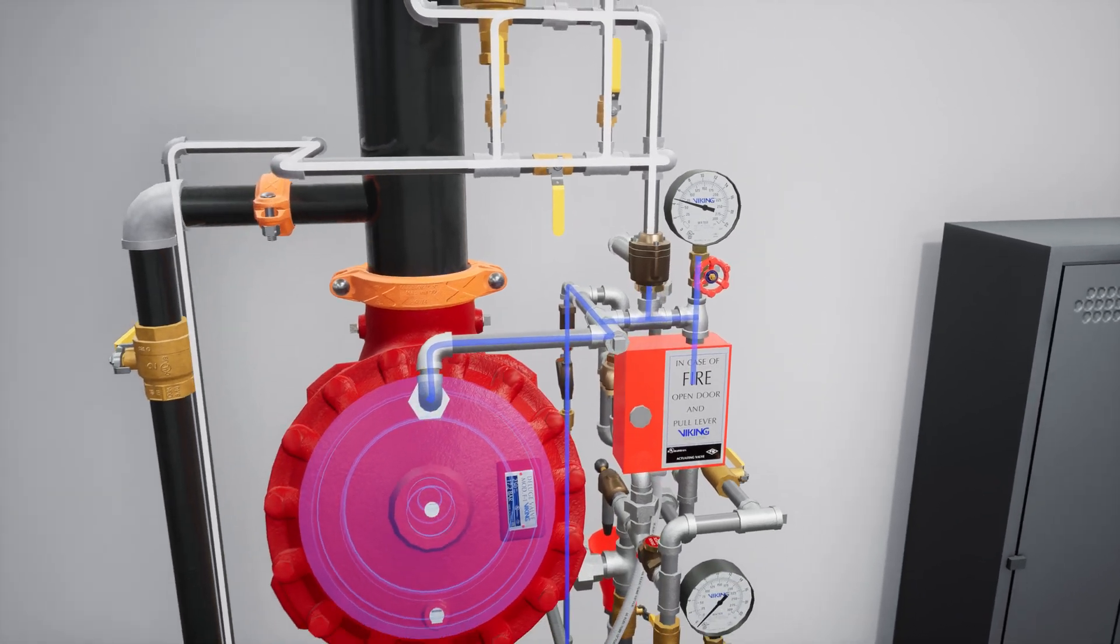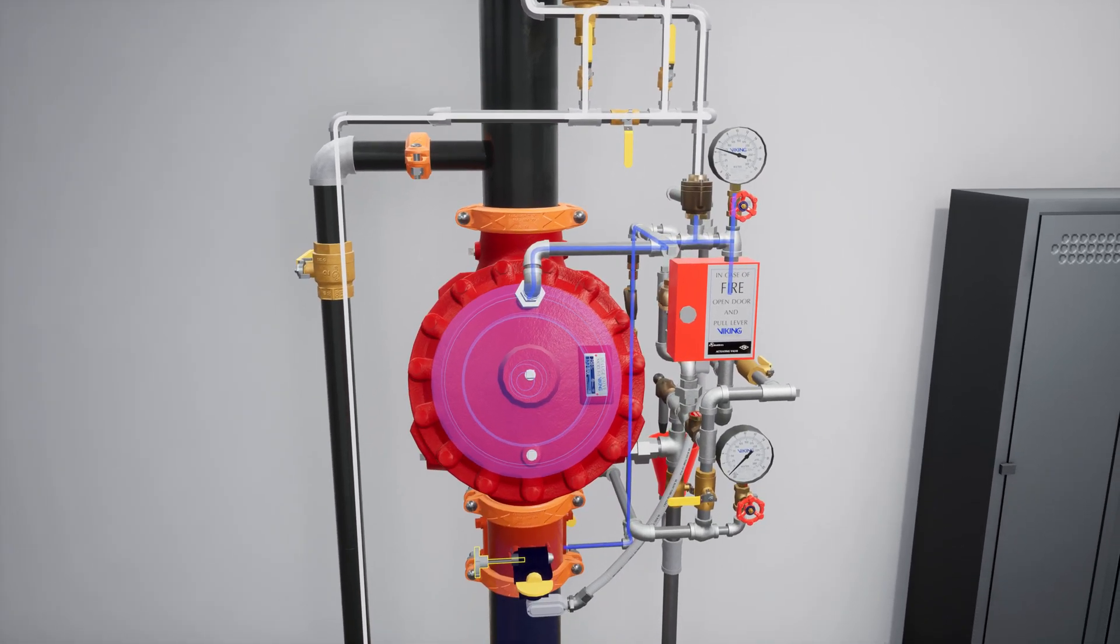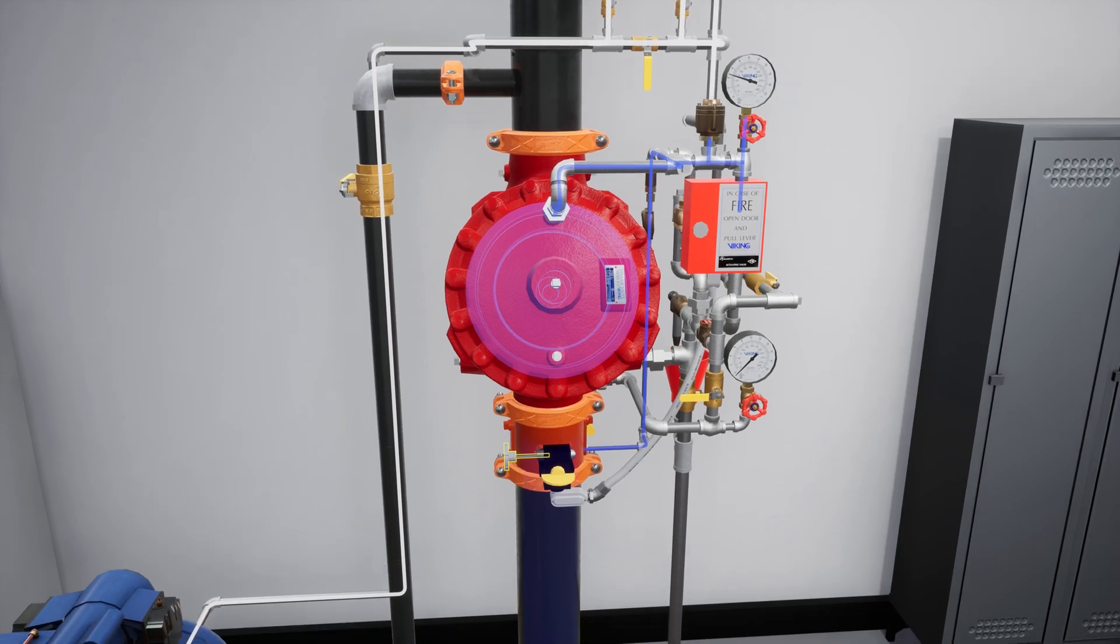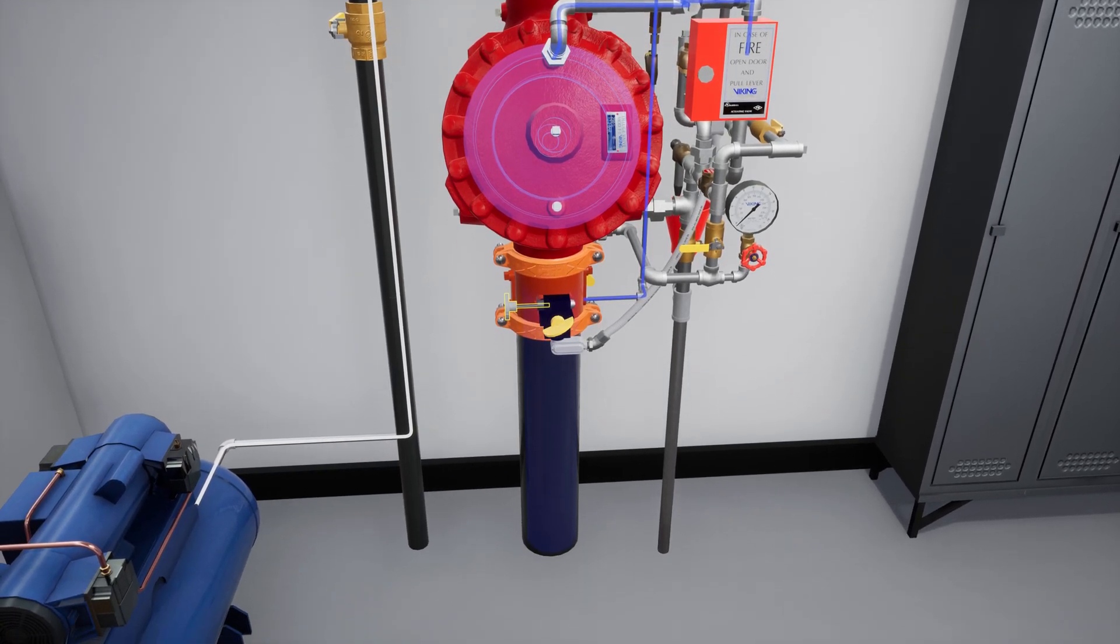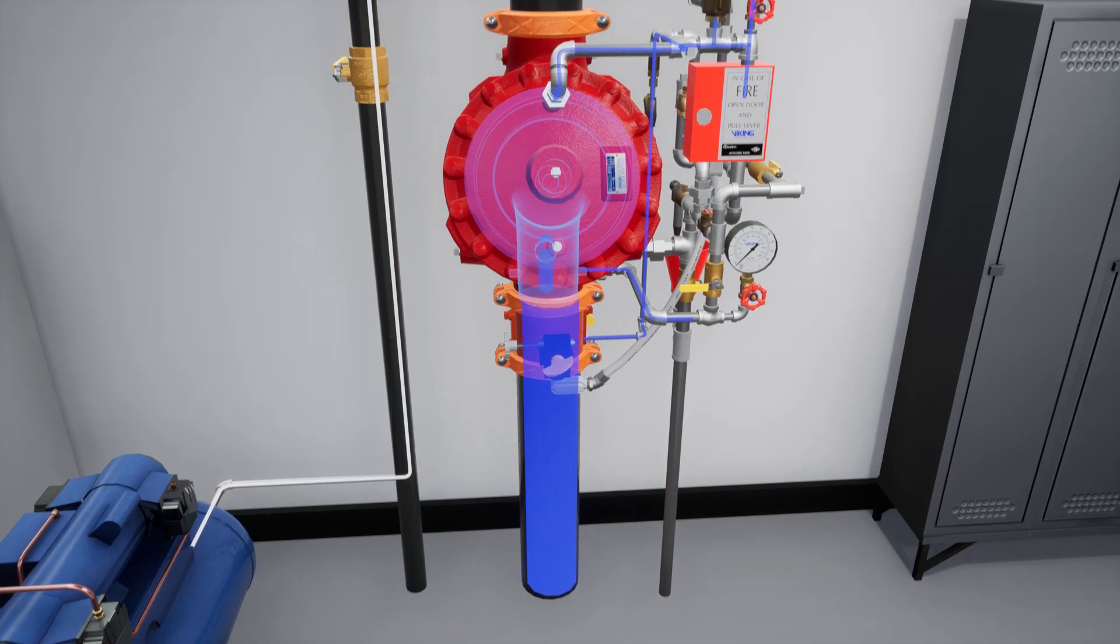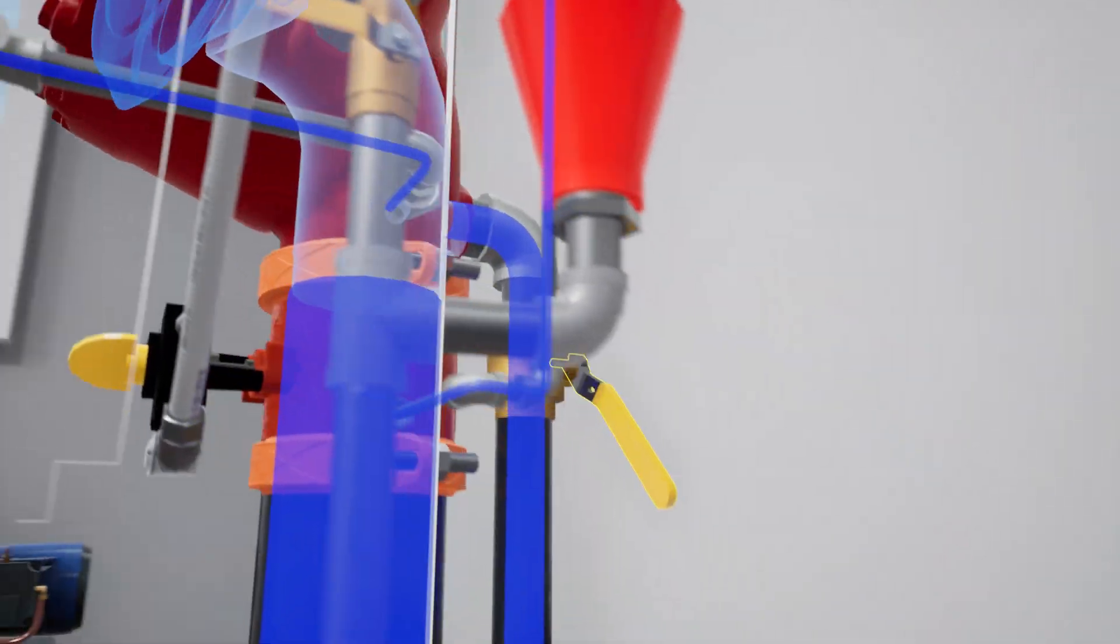Once water pressure has been reestablished in the prime chamber, slightly open the water supply control valve and begin reintroducing water into the system. Once flow has been established, close the flow test valve completely.